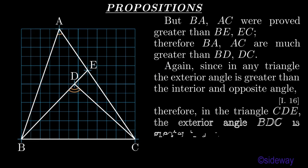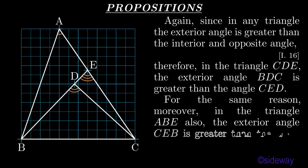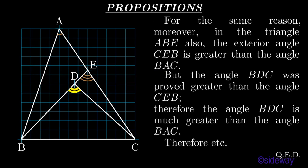Again, since in any triangle the exterior angle is greater than the interior and opposite angle, by Book 1 Proposition 16, therefore in the triangle CDE the exterior angle BDC is greater than the angle CED. For the same reason, moreover, in the triangle ABE also, the exterior angle CEB is greater than the angle BAC. But the angle BDC was proved greater than the angle CEB. Therefore the angle BDC is much greater than the angle BAC.